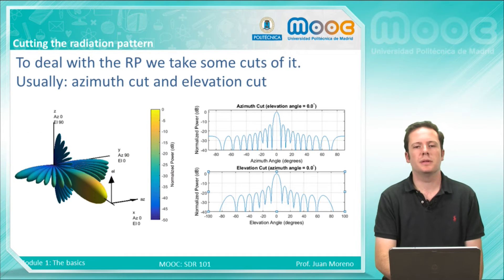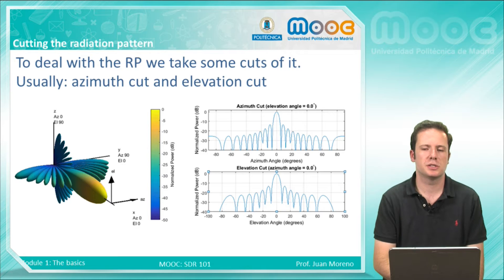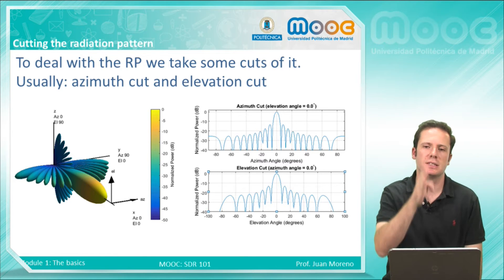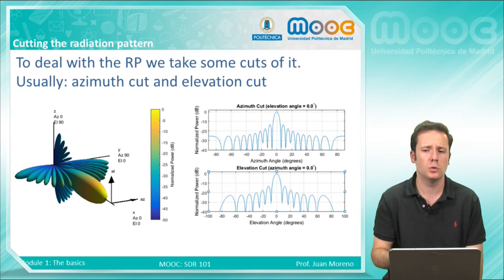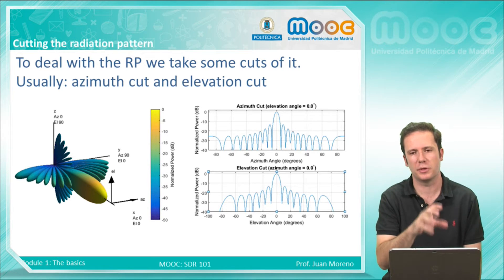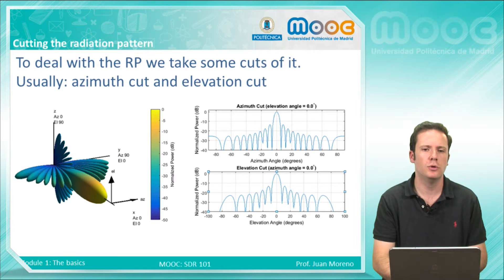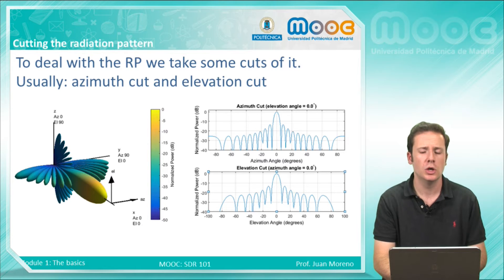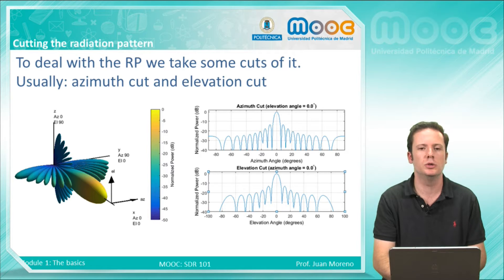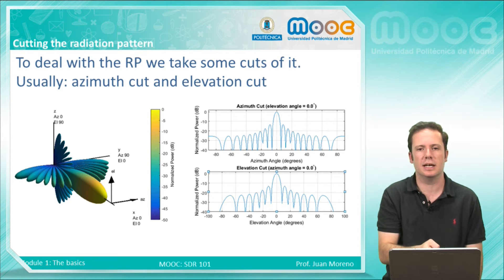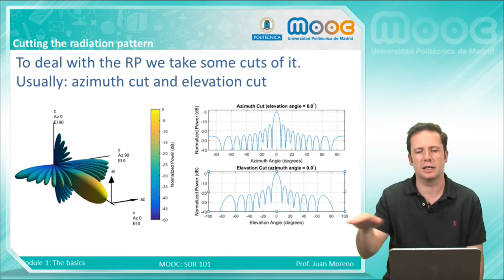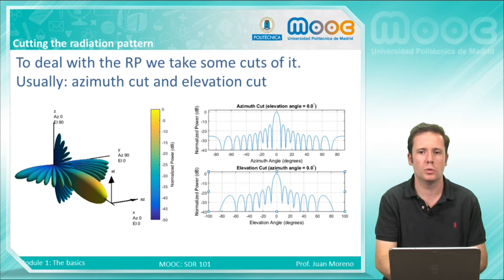Dealing with patterns in three dimensions is very hard, so what we do is take some cuts of this radiation pattern and work with them, moving from 3D to 2D. If we look at the very complicated radiation pattern on the left, we can see that it's almost impossible to deal with directly, so what we do is take one horizontal cut and a vertical cut like this, so we will have the two patterns on the right.